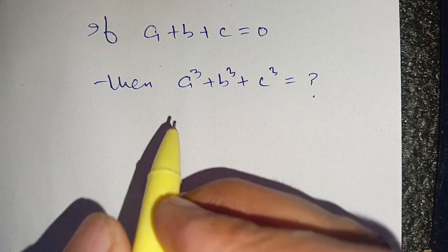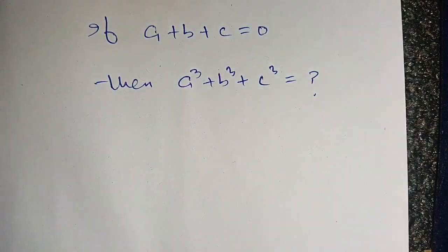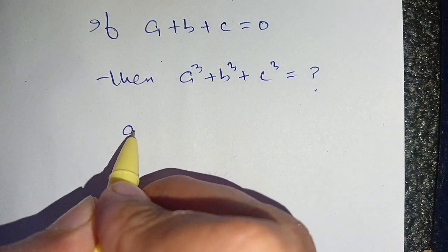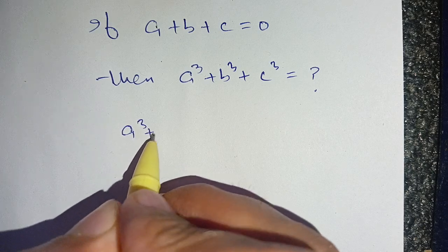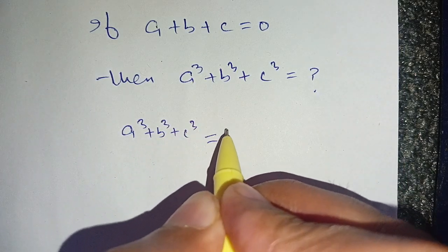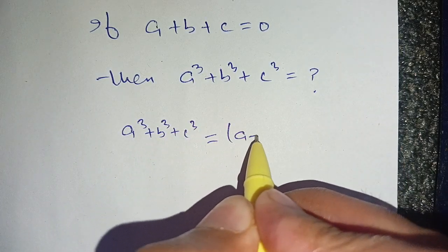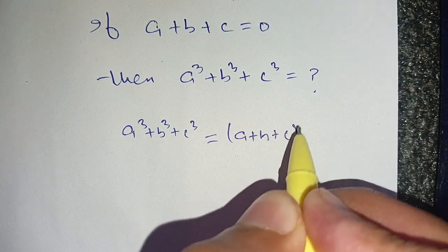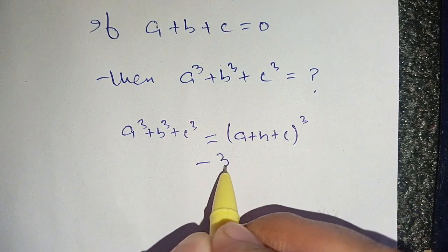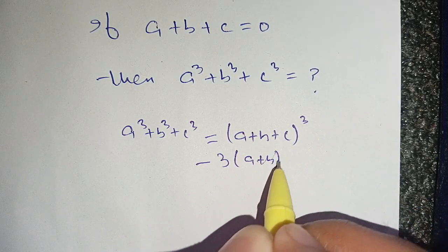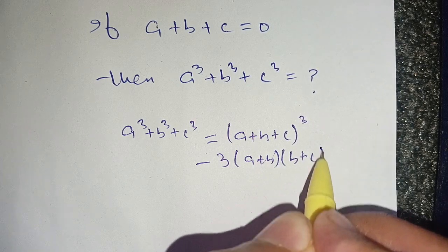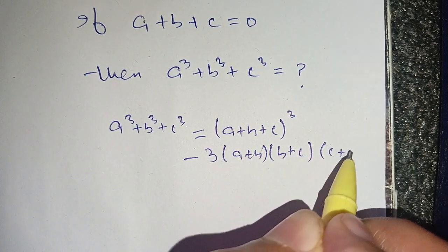Let us solve this. Before solving, we know that a cube plus b cube plus c cube is equal to a plus b plus c, the whole cube, minus 3 times a plus b, times b plus c, times c plus a.